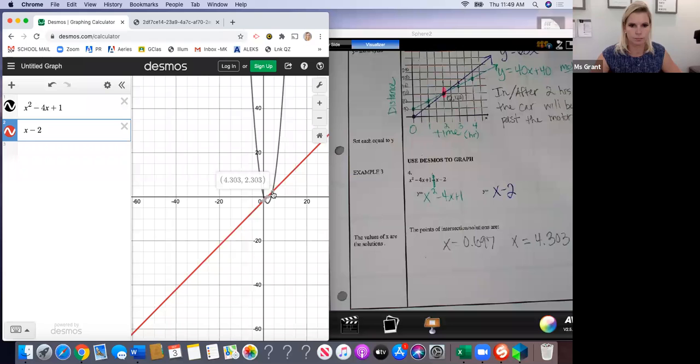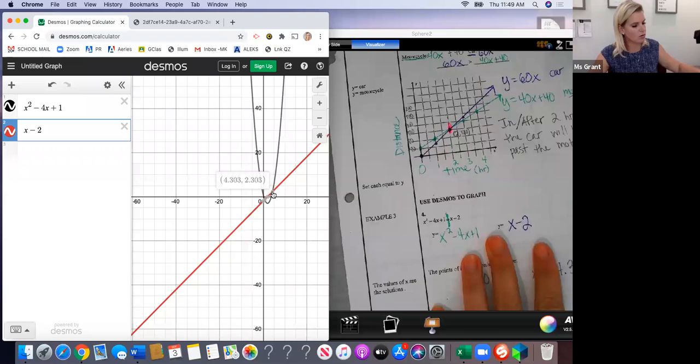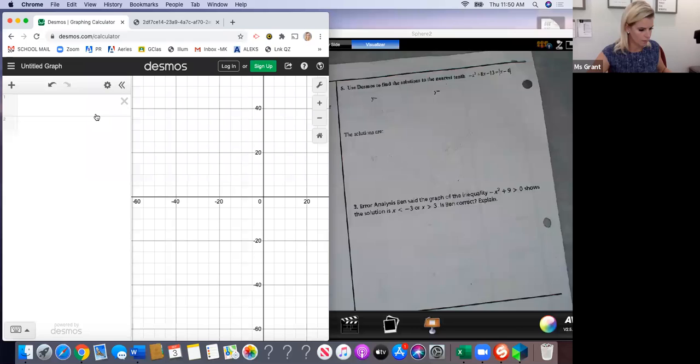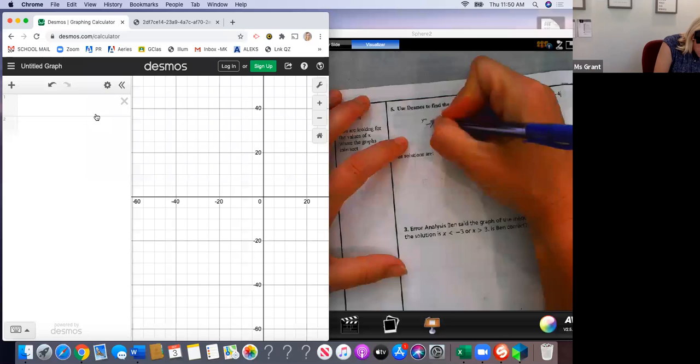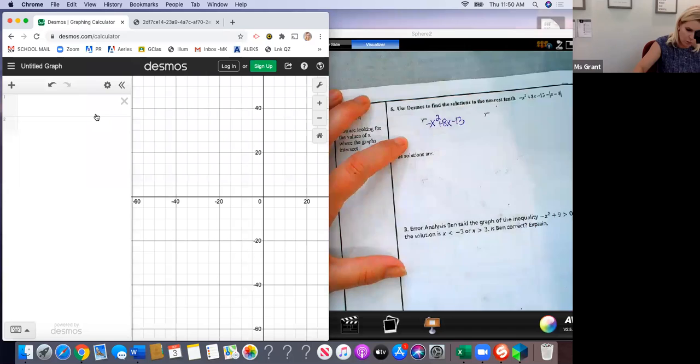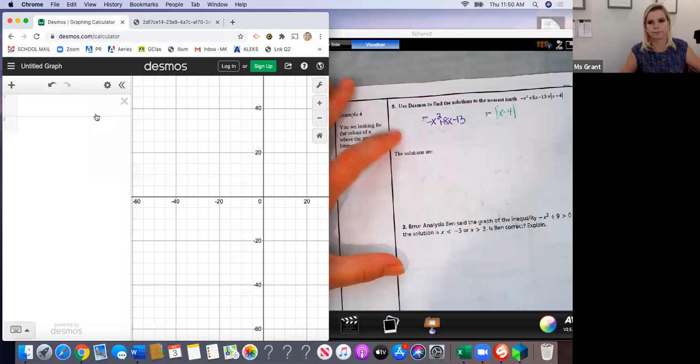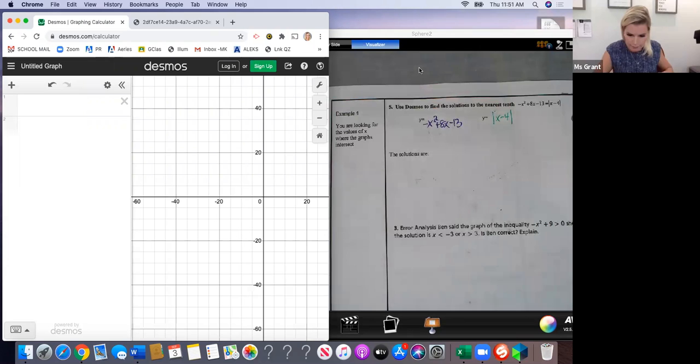It's like magic. So I want to have you do number five on your own on the next page using Desmos. So clear out, you clear out your formulas by x-ing it. And you're going to do negative x squared plus 8x minus 13 for one of them, and you're going to do the absolute value of x minus 4 for the other one. So go ahead and do that. I'll give you a second, a minute, something like that.